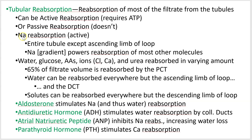First thing we want to get back is sodium. Sodium is important, and we actively have to reabsorb it, so this is an ATP-requiring process. However, once we pump a bunch of sodium back into our tissues, back into our blood and our tissues, that ion concentration gradient — that buildup of sodium — is going to draw a lot of other stuff across that membrane, across that tube wall.